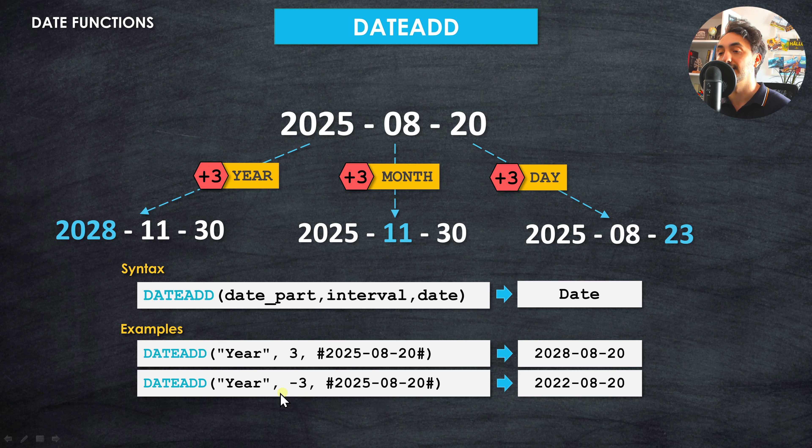In our examples we used positive numbers, but in Tableau we can also use negative numbers to subtract intervals. For example, using an interval of negative three for years changes 2025 to 2022. Similarly, subtracting three days changes day 20 to day 17.